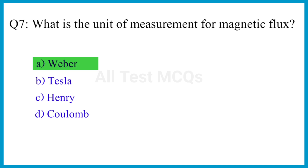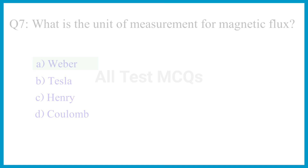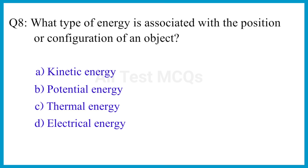Question number 8. What type of energy is associated with the position or configuration of an object? The correct answer is option B. Potential energy.